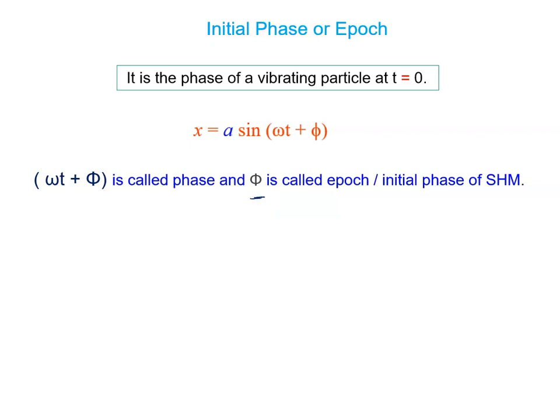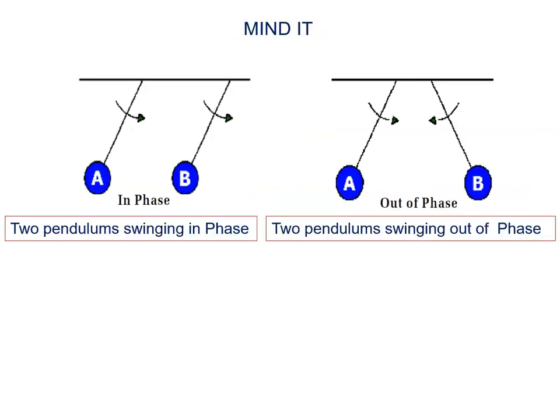Here on the left side, the pendulums A and B, they are releasing from rest. A and B are released from extreme position, both are in the same phase.